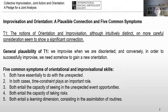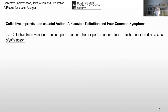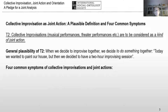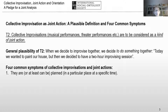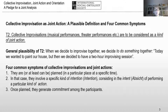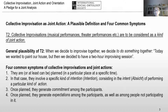Now let's see the second couple: collective improvisation as joint action — a plausible definition and common symptoms. Second thesis: collective improvisations are to be considered as a kind of joint action. The general plausibility of this thesis is that when we decide to improvise together, we decide to do something together — for example, we plan to paint our house, but then we decide to have a two-hour improvised session. Collective improvisation and joint action can be planned at a particular place and specific time. In that case they involve a specific kind of intention: the intent of performing a particular kind of action. Once planned, they generate commitment among the participants, and once planned, they also generate expectations among participants as well as among people not participating.